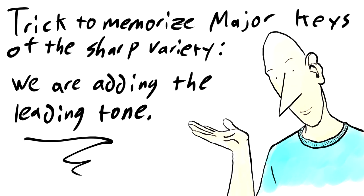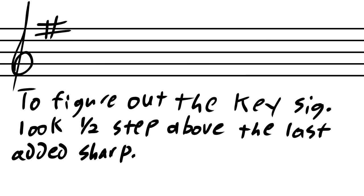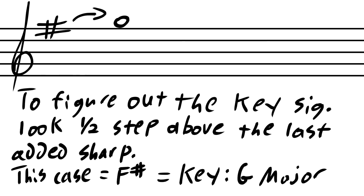So here's the trick to finding major keys if you have sharps in your key signature. What we're doing is adding a leading tone with each sharp. Remember scale degree seven? That's what we're making when we write these sharps in the key signature. So in order to find scale degree one, we just look a half step above the last sharp we added. That's all there is to it. So that first sharp we added, F sharp, that's just the leading tone for G major.